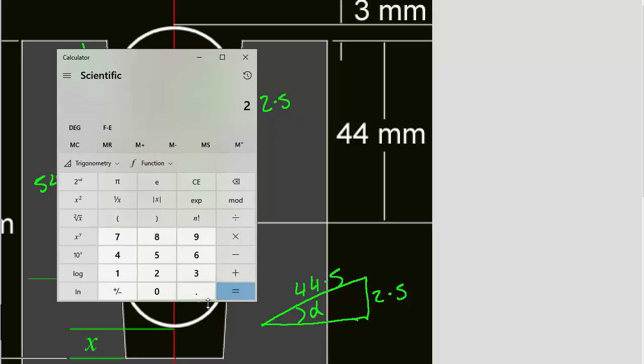So we want 2.5 divided by 44.5 equals, and then we want trig, second, the arc sine. So the answer is 3.22 degrees.